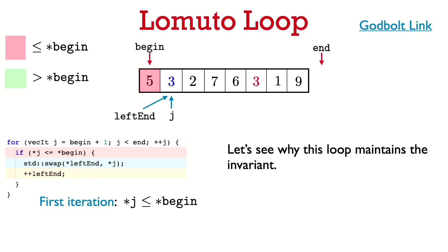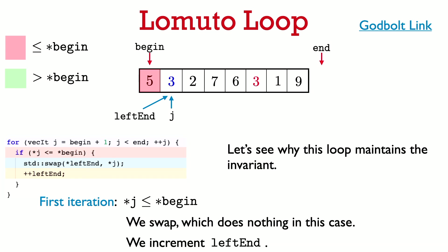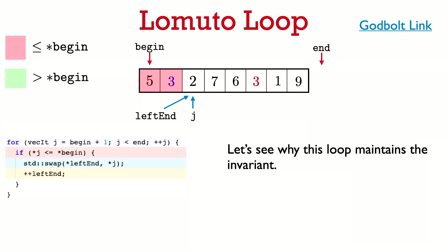In the first iteration, we compare the element pointed to by j, which is 3, with the element pointed to by begin, which is 5 (the pivot). The if condition is true, so we swap the elements pointed to by leftend and j — but this does nothing since they are the same element. Then we increment leftend. At the start of the second iteration, leftend and j have both been incremented, and the red area now includes 5 and 3, both at most the pivot, so the invariant is preserved.